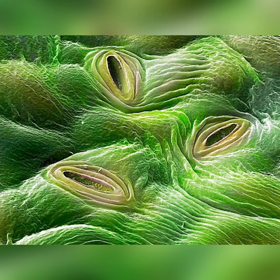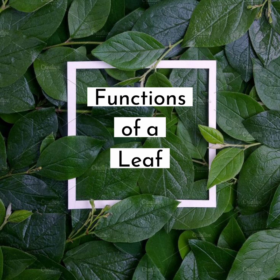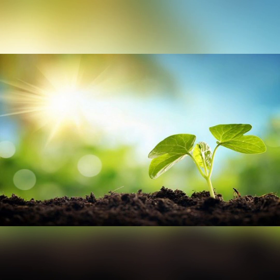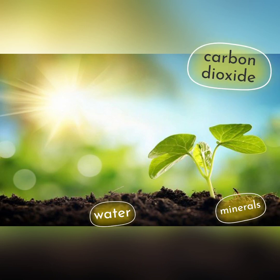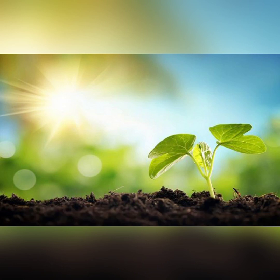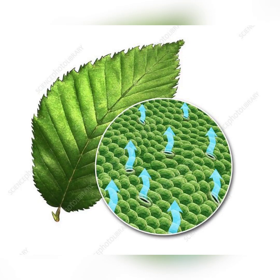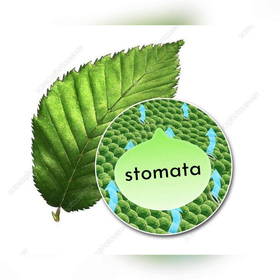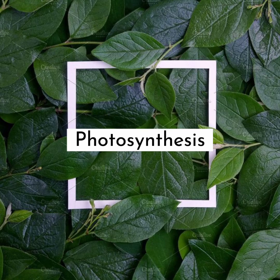During photosynthesis, the leaves generally perform the following functions. Firstly, the leaf is the kitchen of the plant — just like we prepare our food in the kitchen, the leaf prepares food for the plant using water, minerals, carbon dioxide, sunlight, and chlorophyll. Secondly, in some plants the leaf stores extra food, just like how we do it in our kitchen. Thirdly, the leaf takes in carbon dioxide and gives out oxygen through the stomata during photosynthesis.